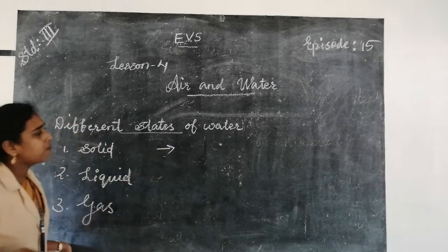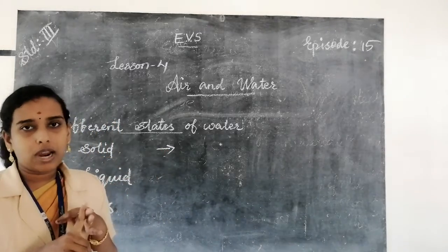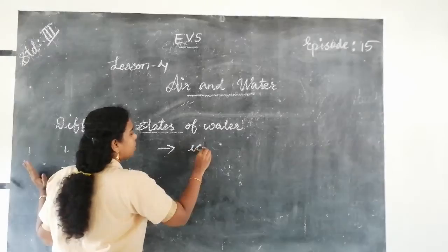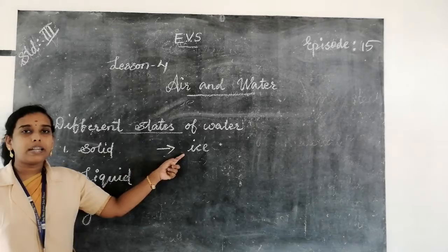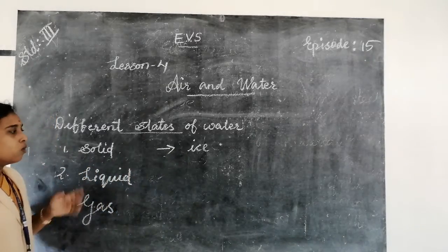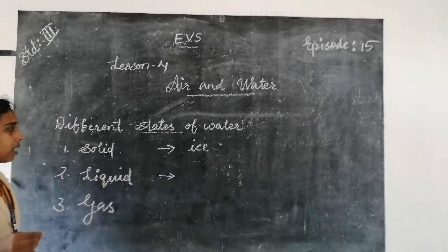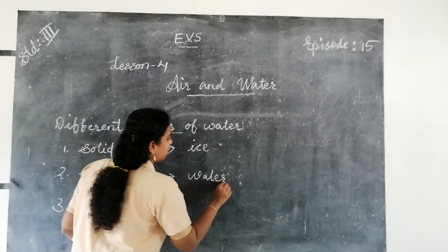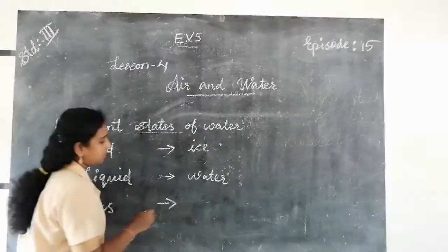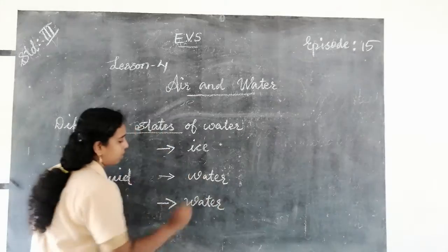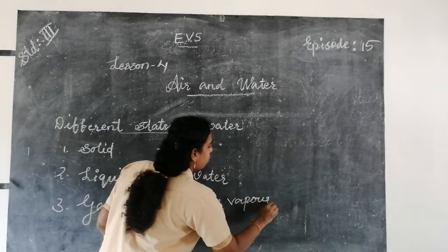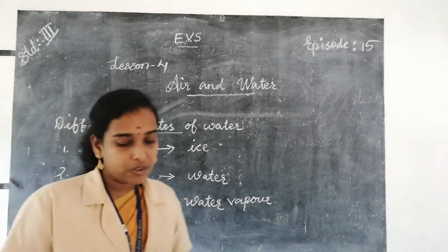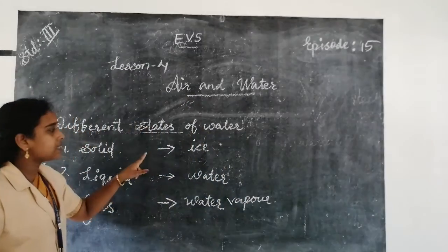We can see the different forms of water, which are ice, water, and water vapor. If we keep water in the freezer, we can make it into the shape of ice. Ice is the solid form of water. When ice is removed from the freezer, it turns to water, and water is the liquid form of water. Then water converts into water vapor, and water vapor is the gaseous form of water. These are the different states of water.